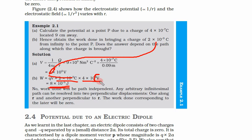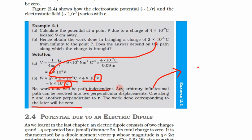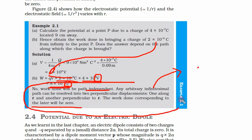The work done is path independent, as we have already seen. Any arbitrary path can be resolved into two perpendicular displacements — one along r and another perpendicular to r. The work done corresponding to the perpendicular component will be zero. So work done is independent of path.